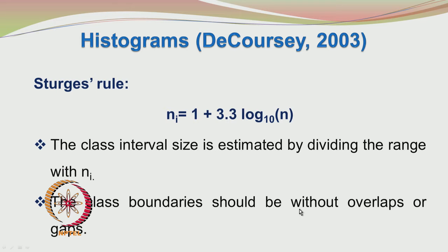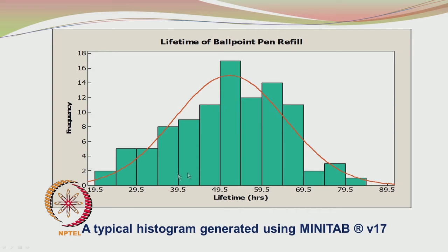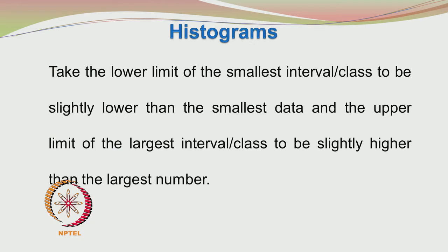We can do even better than visual inspection by using probability charts. In many cases, your experiments or modeling may be based on certain assumptions — for example, that the errors in the experiments are random and normally distributed with zero mean and constant variance. So you want to check whether the errors are actually distributed normally, and for this reason we use probability distribution charts.